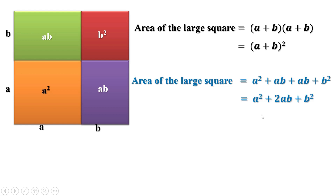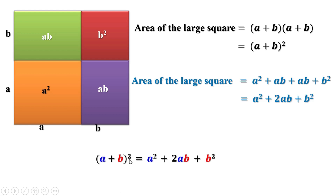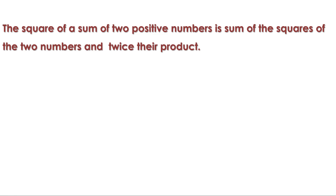This is the area of the large square calculated in two different ways, and since there is only one large square, the two expressions must be equal. Therefore: (a + b)² = a² + 2ab + b². The square of a sum of two numbers equals the sum of the squares of the numbers plus twice their product.